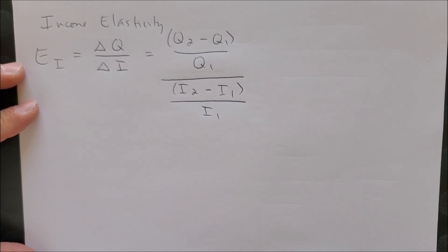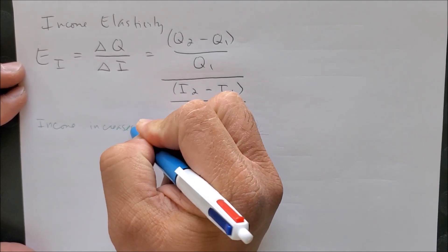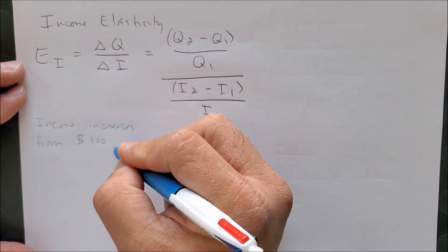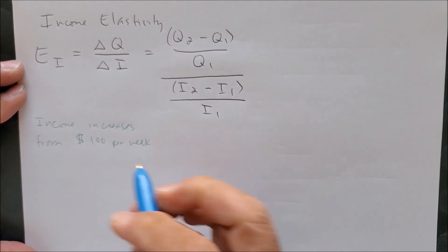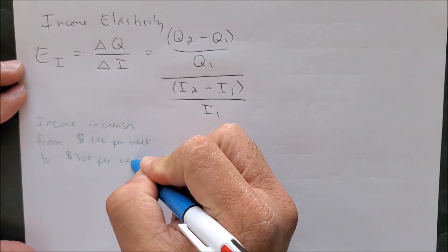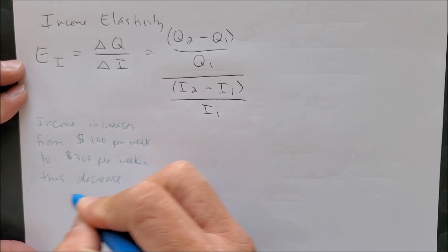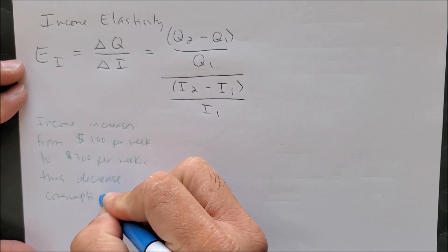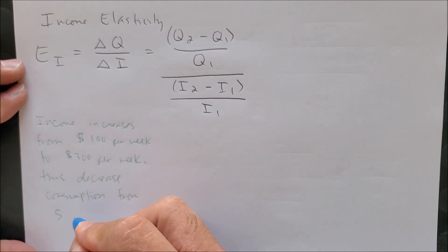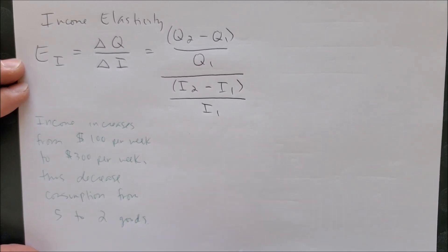Let's say income increases yet again from $100 per week to $300 per week, thus decreasing consumption of whatever good from 5 to 2 goods.